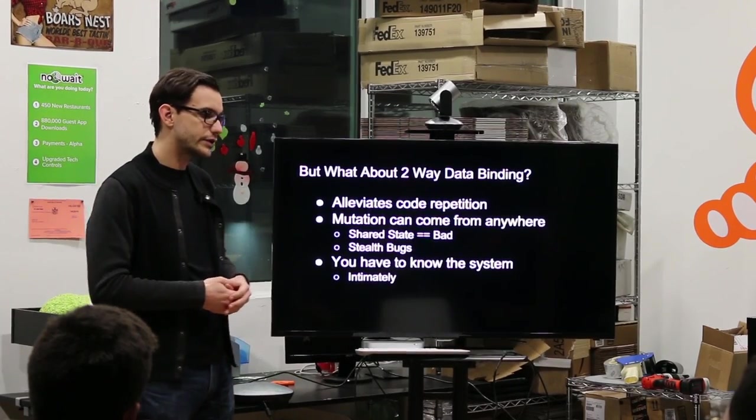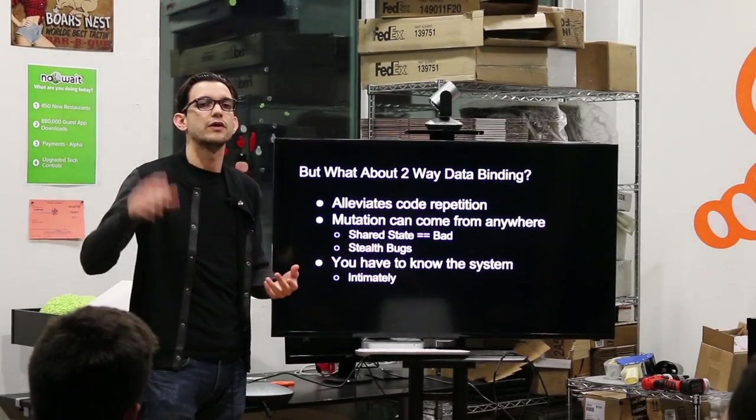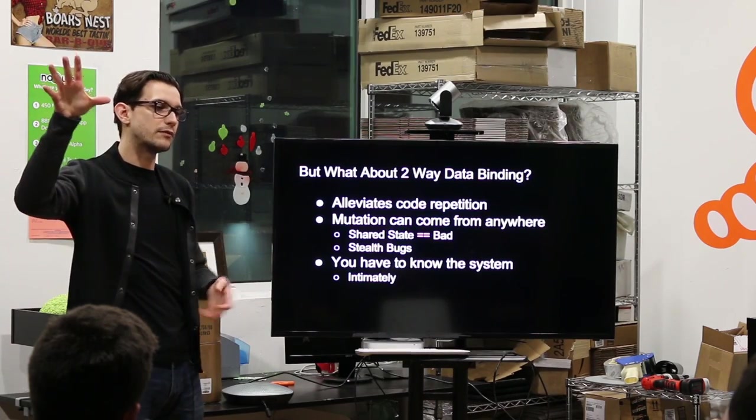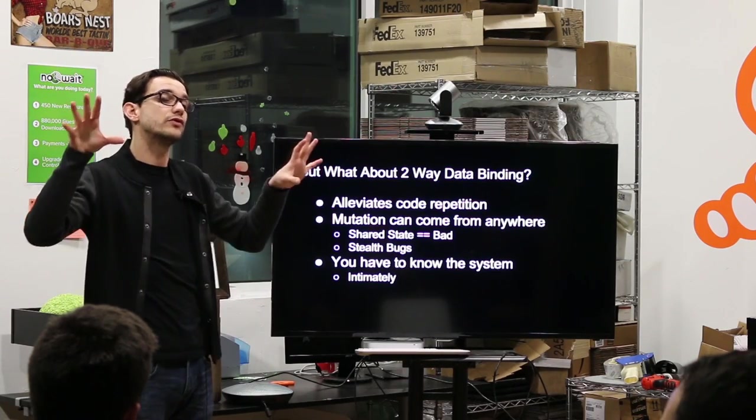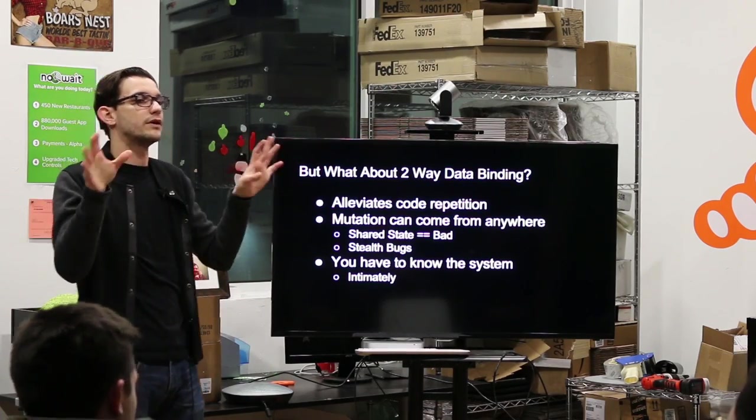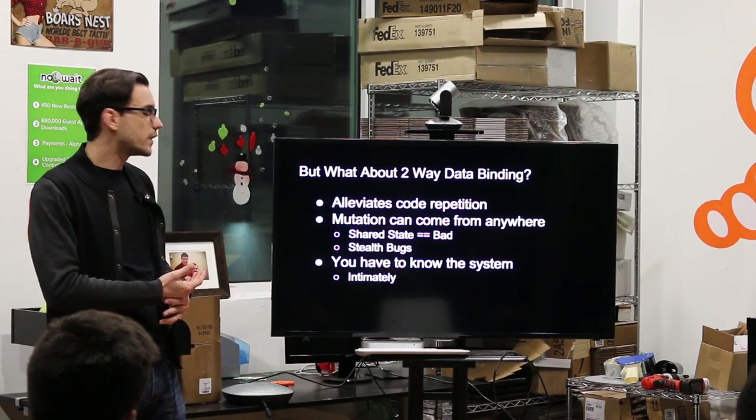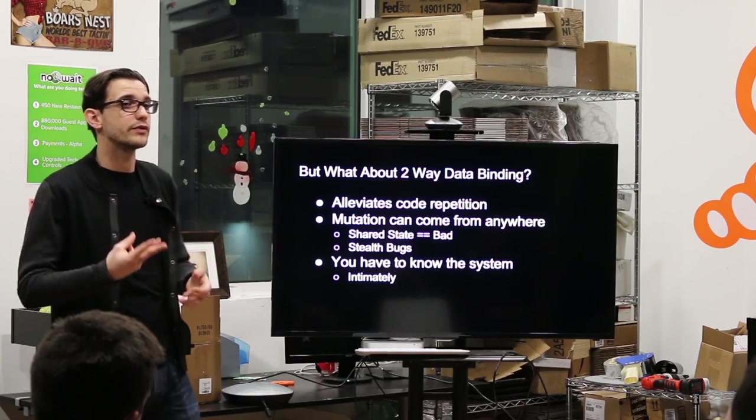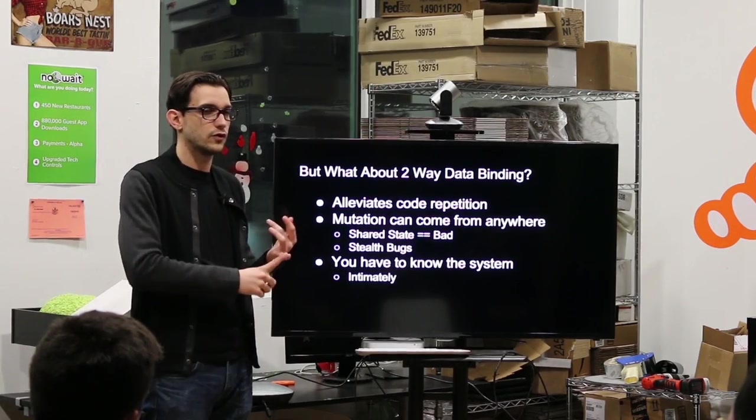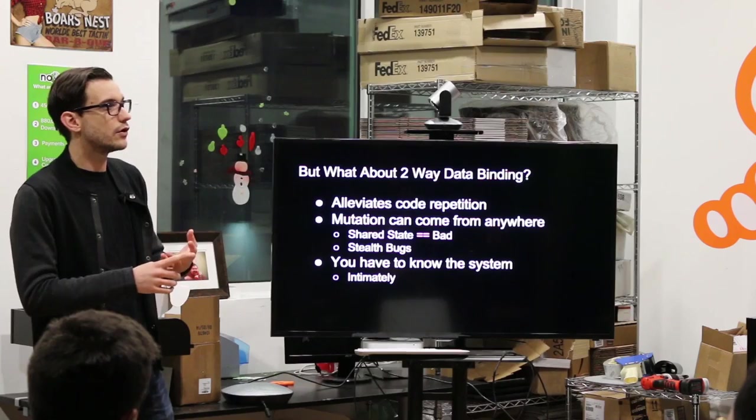When you also have that mutation, you have what I call stealth bugs. So if this can affect the model and this can affect the model and these two views are live, you don't know where the bug is coming from. Whereas if you're using flux, it's pretty simple. It's going to be in one of three places. It's either going to be the store, the actions or your view.